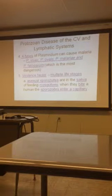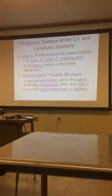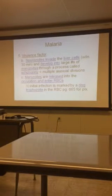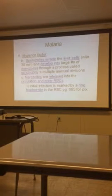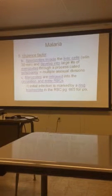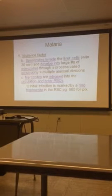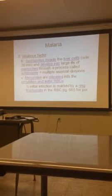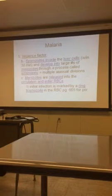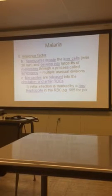In a human host, sporozoites enter a capillary and travel through the blood to the liver cells within 30 minutes of the bite. There they undergo schizogony — multiple asexual division — and develop into large numbers of merozoites. These merozoites are released into the circulation, enter red blood cells, and undergo more schizogony producing more merozoites. They keep replicating until they burst the red blood cell and are liberated to infect new red blood cells.